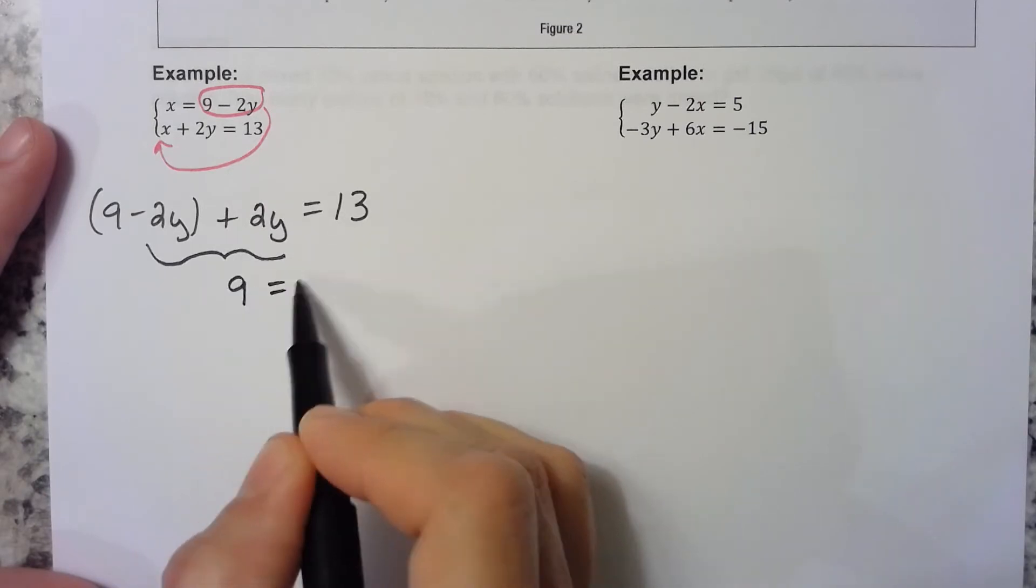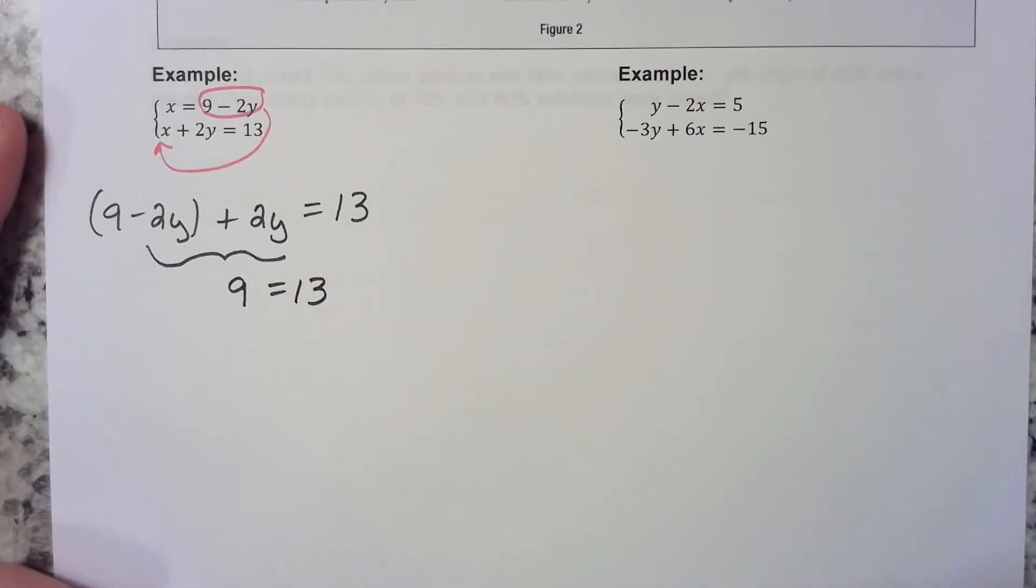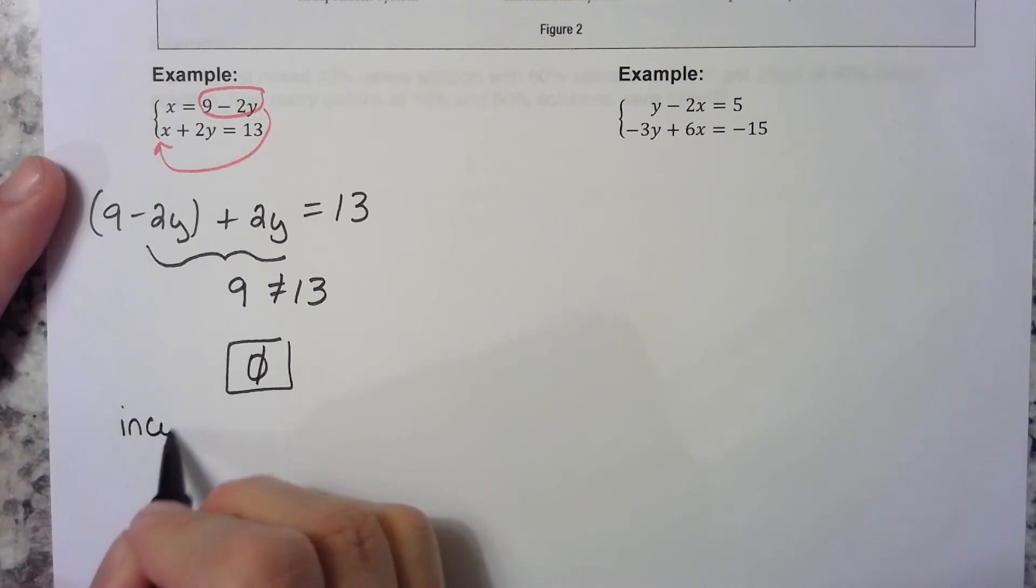Oh, that's not true, is it? This is not a true statement. There's nothing else we can do. This system has no solution, and it is called an inconsistent system.